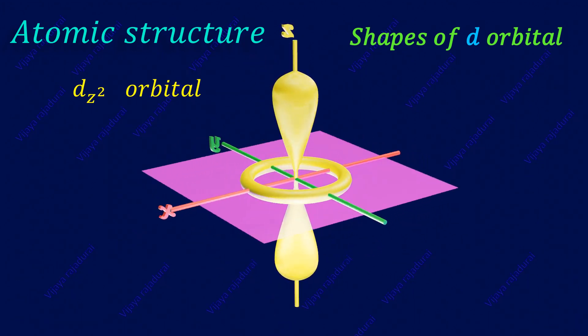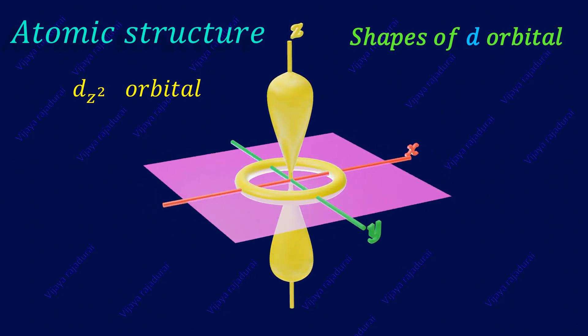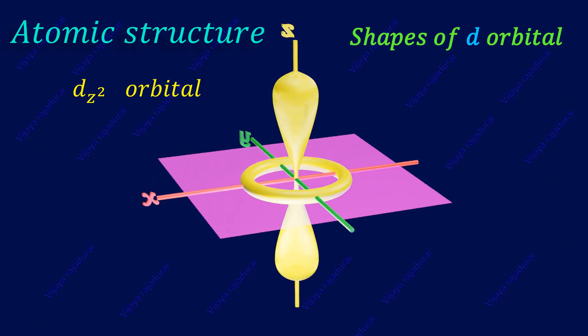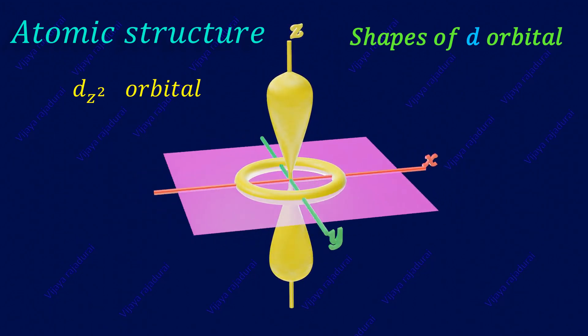In the dz² orbital, the lobe is oriented along the z axis.